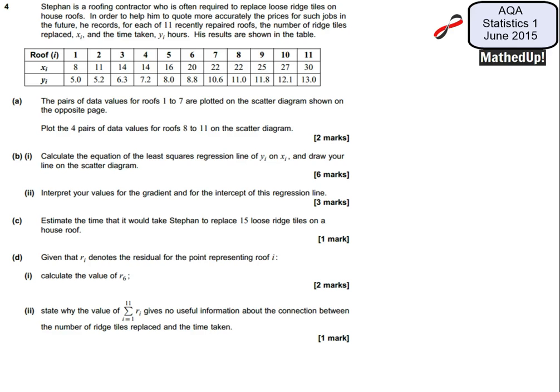This is question number 4 from the AQA Statistics 1 June 2015 exam paper. Stefan is a roofing contractor who is often required to replace loose ridge tiles on house roofs. In order to help him quote more accurately the prices for such jobs in the future, he records for each of 11 recently repaired roofs the number of ridge tiles replaced, which he's called X, and the time taken, which he's called Y. And these results are displayed here.